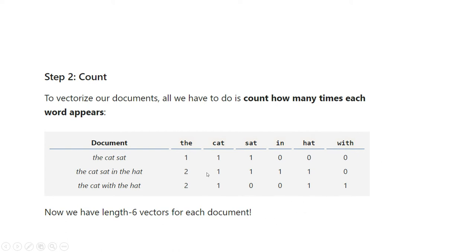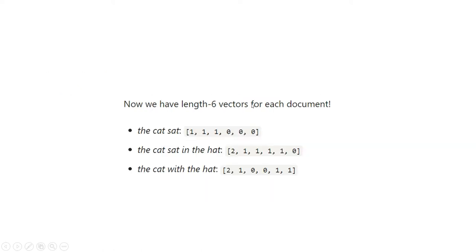So now we have length-six vectors for each document. We vectorize so that one represents the overall occurrence across all documents. 'The' occurs overall two plus two plus one, which equals five times. So we have length-six vectors. The first document 'the cat sat' is represented as one, one, one, zero, zero, zero — the first three are one and the remaining are zero since there are six total words. For the second document: 'the' occurs two times, 'cat' one time, 'sat' one time, 'in' one time, and 'hat' is not present.